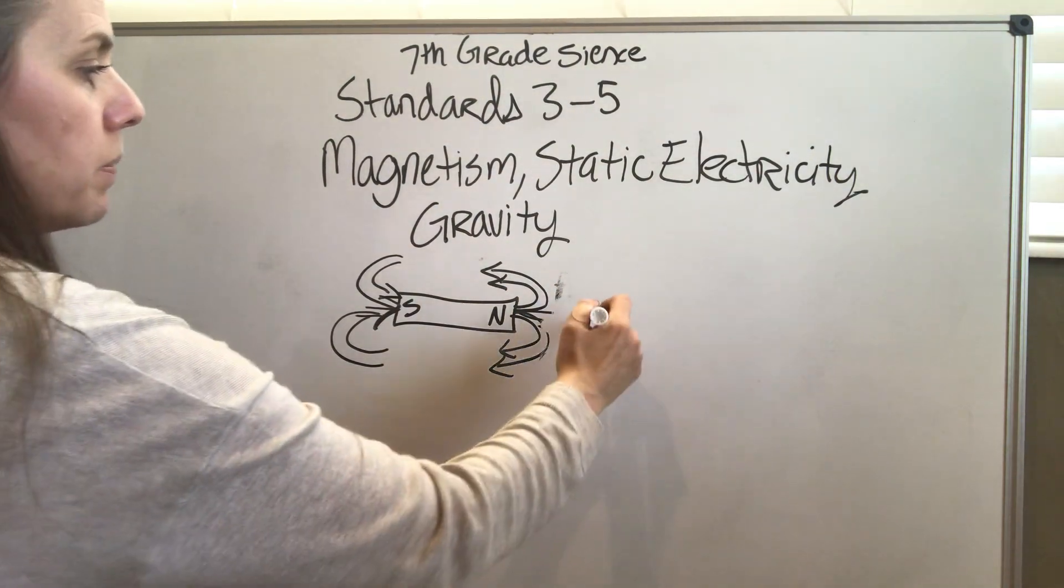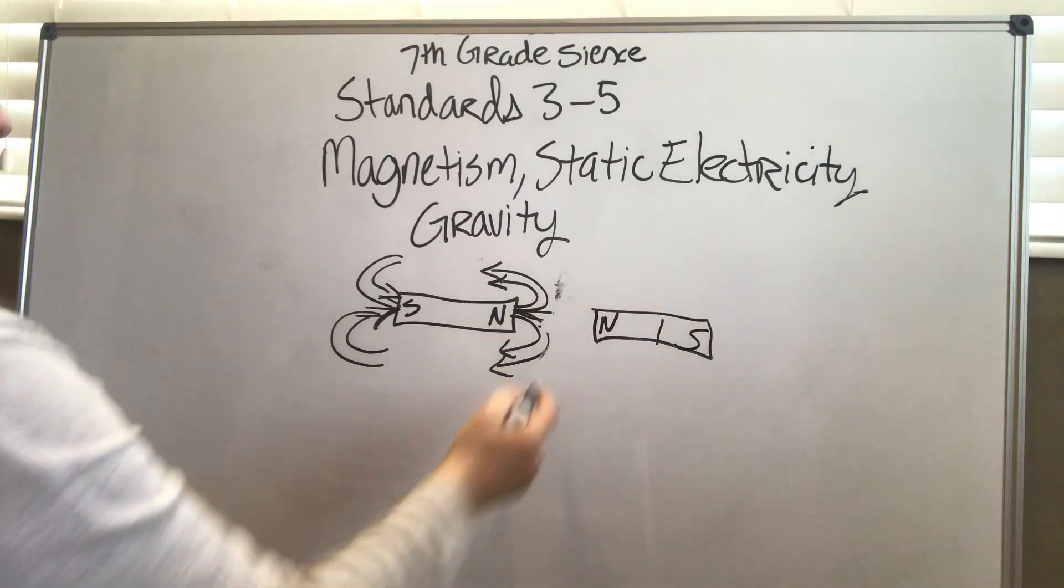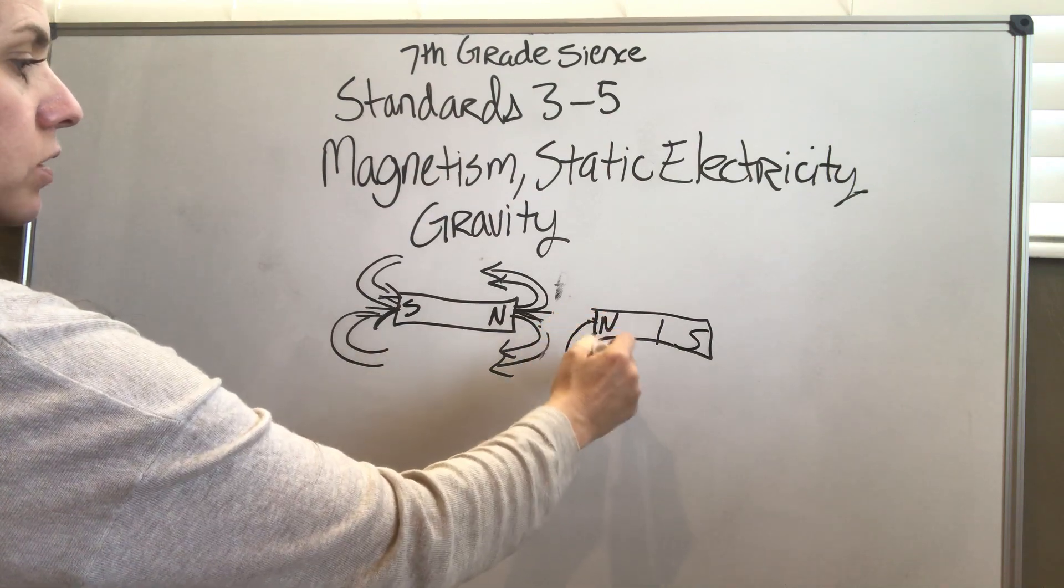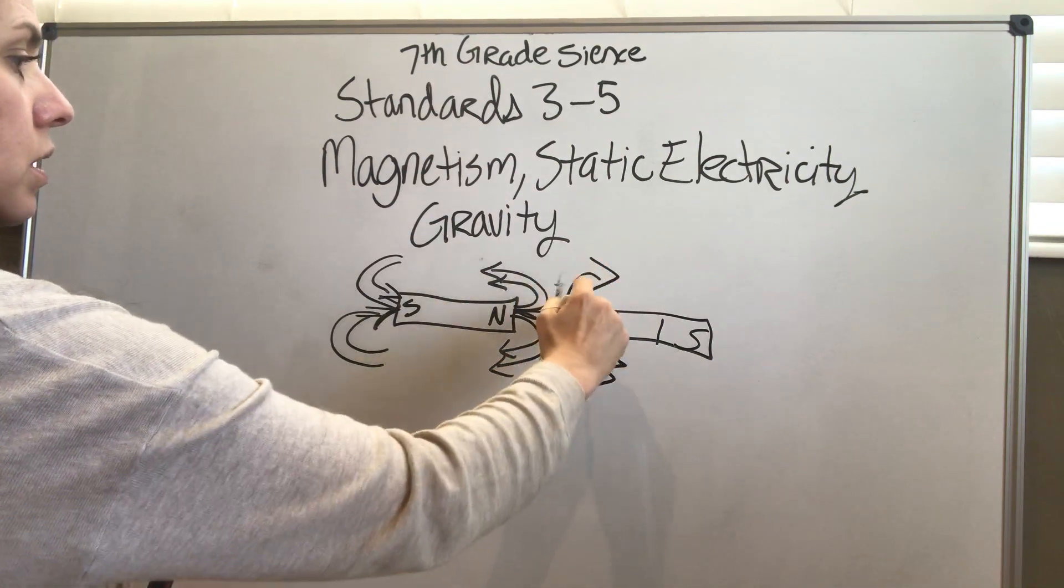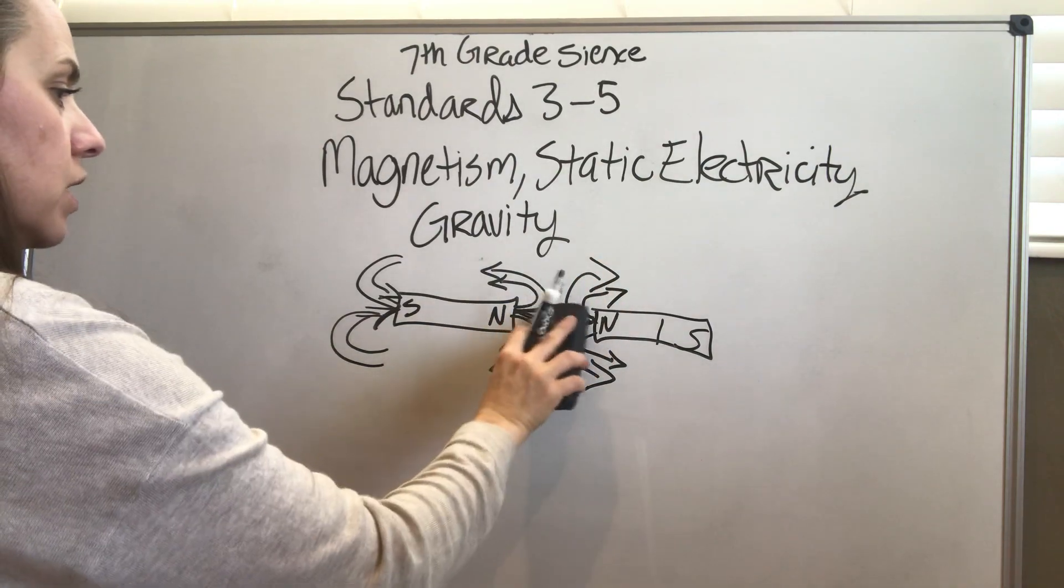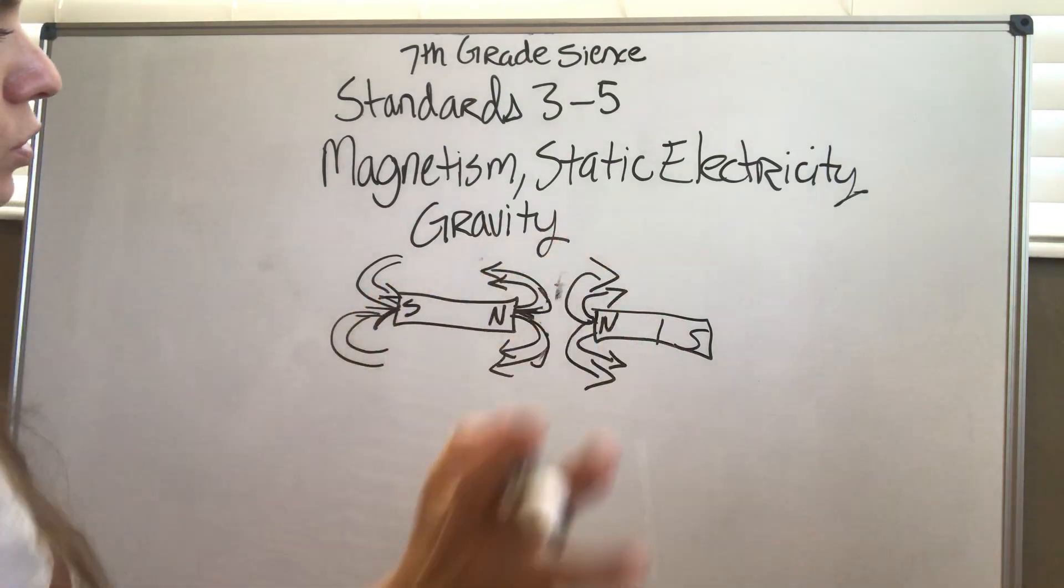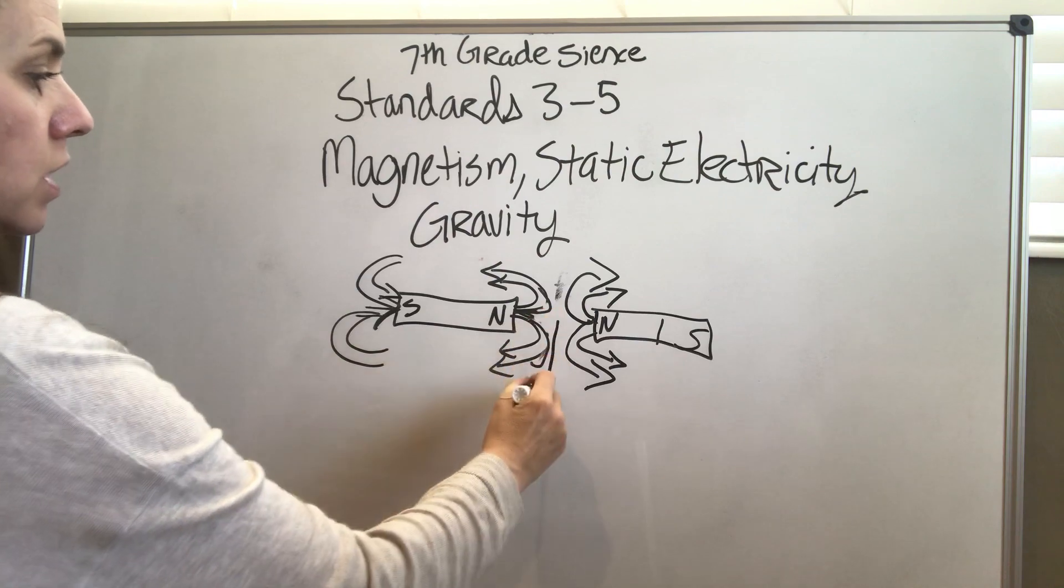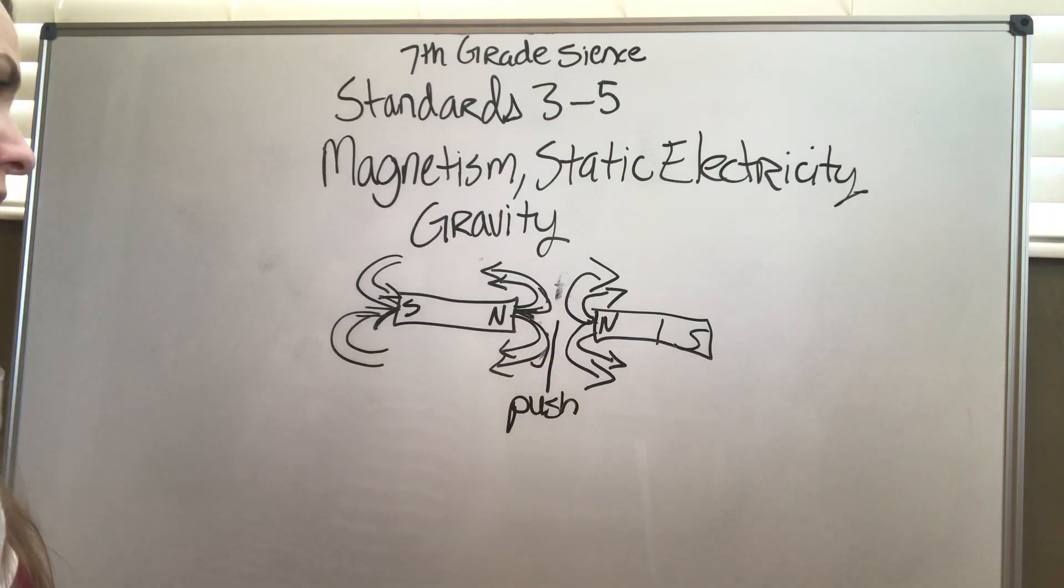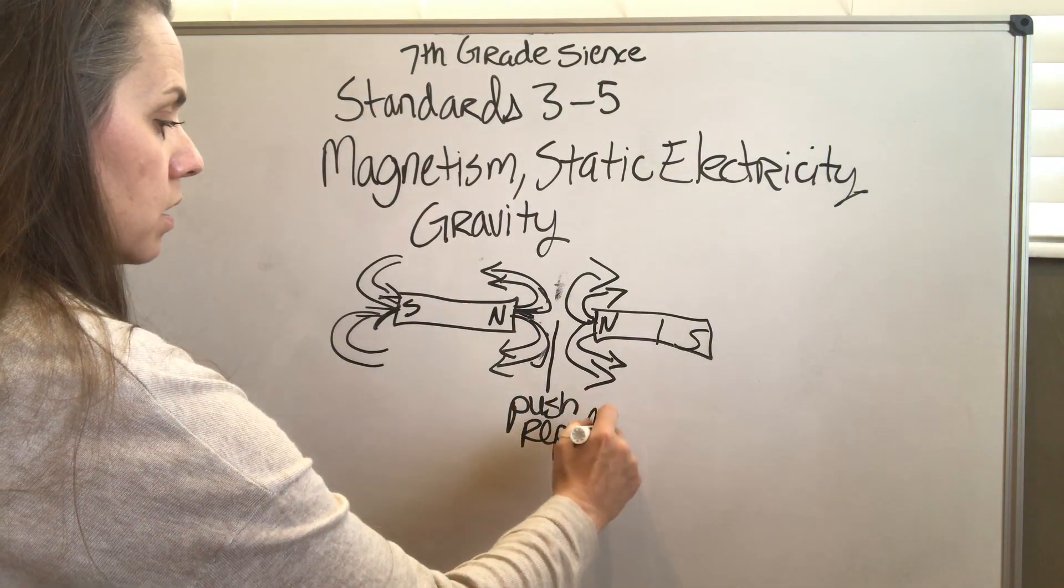Let's say we put another magnet over here that is north and south. This magnet's magnetic fields are going to go that way from the north, and these two sides are going to repulse each other. The fields just push away from each other, so instead of pulling we have pushing, and that is repulsing rather than attraction.